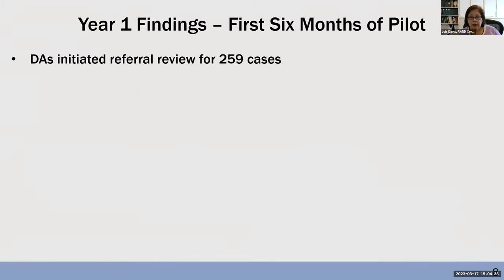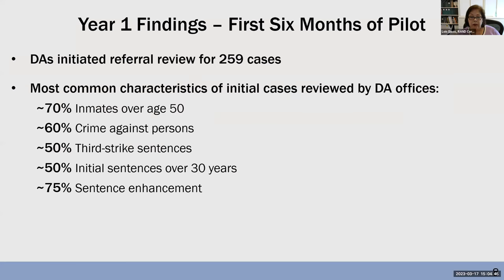In the first six months of the pilot, basically September 2021 to March 2022, the DAs reviewed 259 cases. The most common characteristics: 70% of individuals were age 50 or older, 60% were crimes against persons, 20% were property crimes, and about 7% were drug-related. About half were three strikers, half had initial sentences over 30 years, and 75% had some kind of sentence enhancement — a nickel enhancement in about a third of cases, or a firearms enhancement in about a quarter.